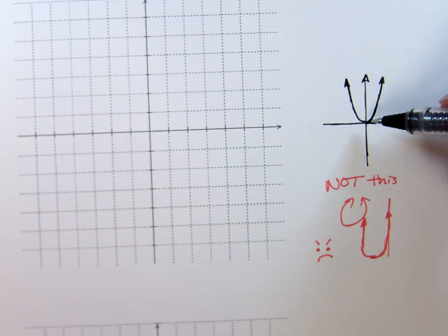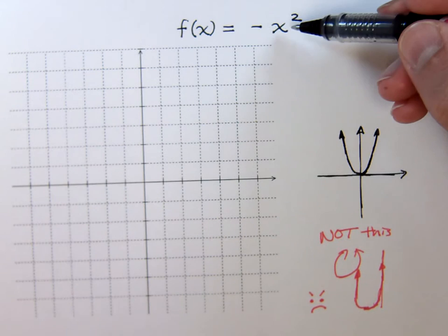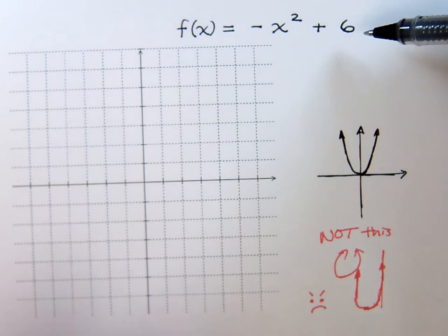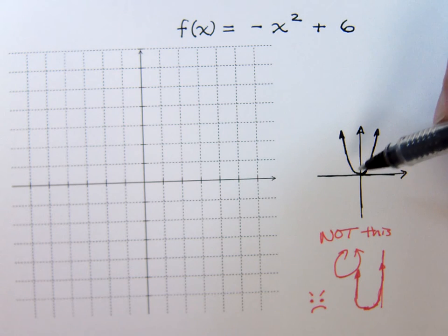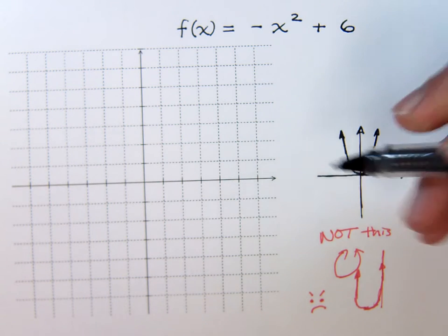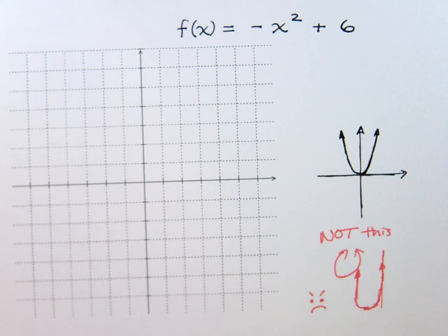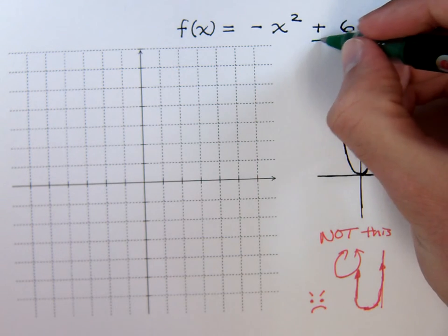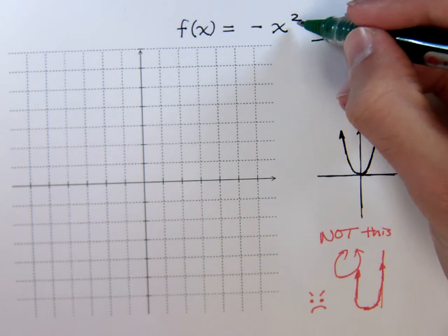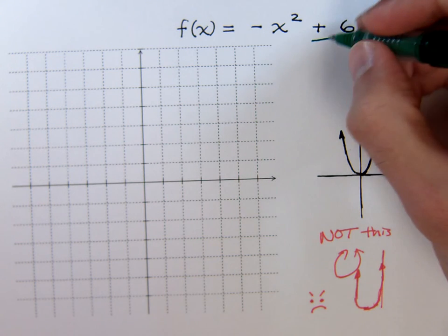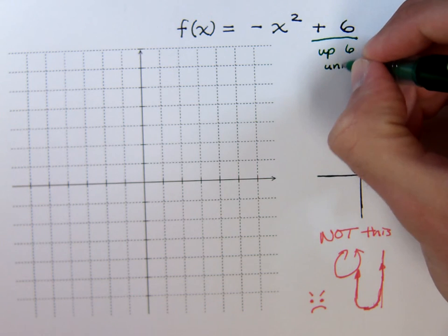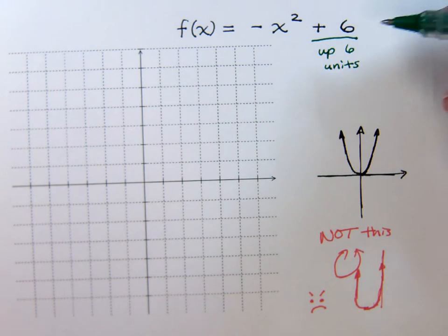Well, since we know what the basic shape is for my x-squared, I look at what's being done to the x-squared to give me an idea about where this guy's supposed to be. If I look at the end, just like we've seen with all the other nonlinear functions, this number out here, outside of the squaring part, tells you how to move up or down. So according to this, I'm going to move up 6 units. It's a positive 6, so it only makes sense to go up 6.